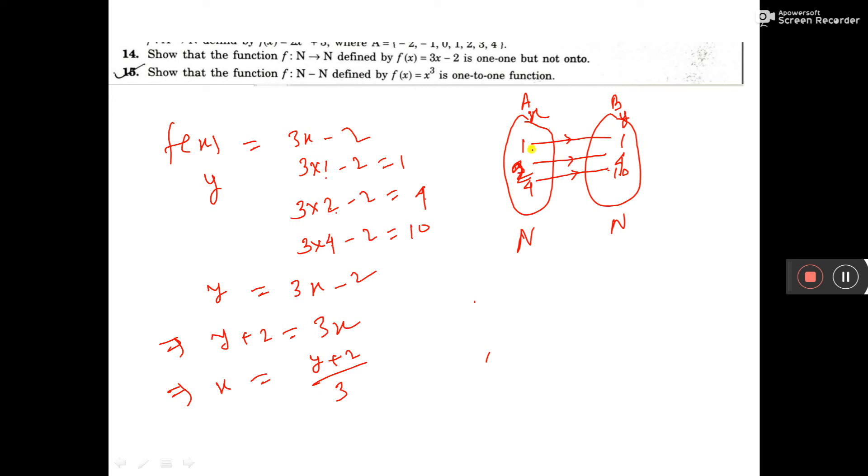This means every element of set A maps to a particular element in set B, and no two elements are connected to one element in set B. Any element of B does not have more than one preimage in set A. That is why the function is one-to-one but not onto.